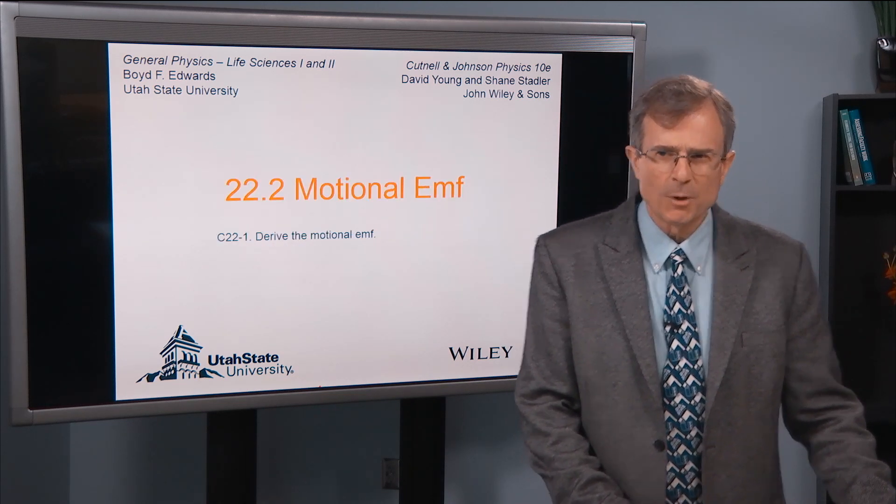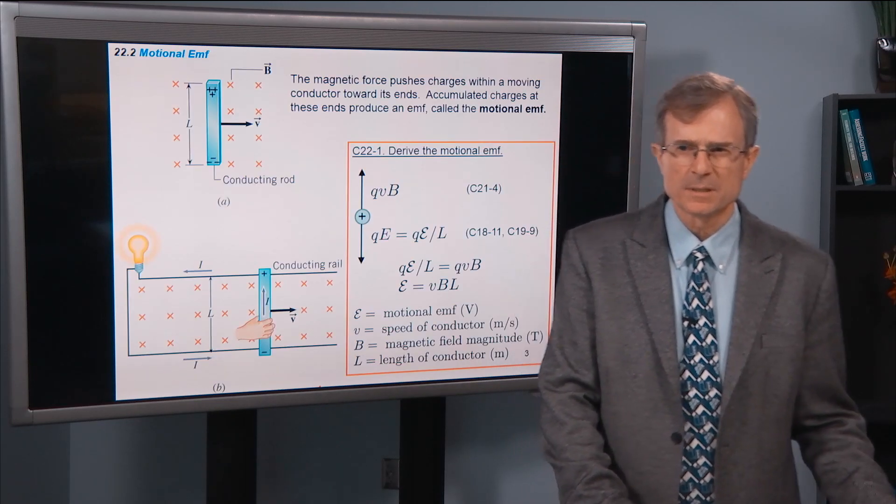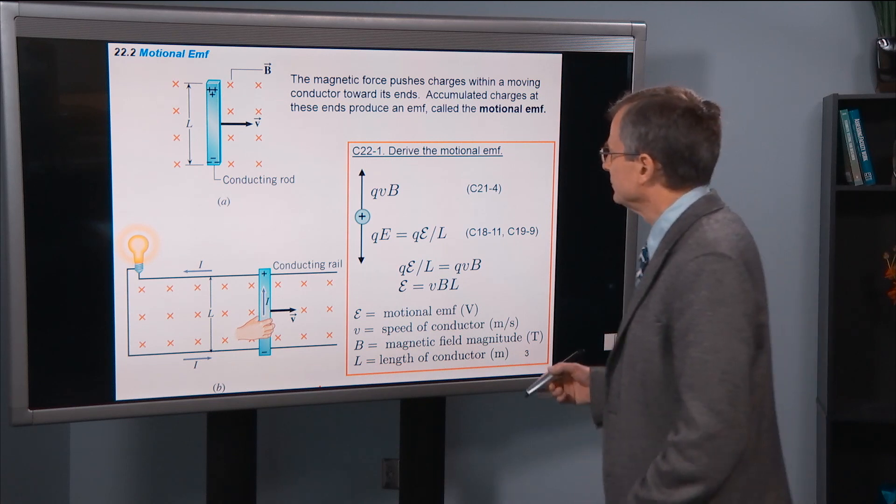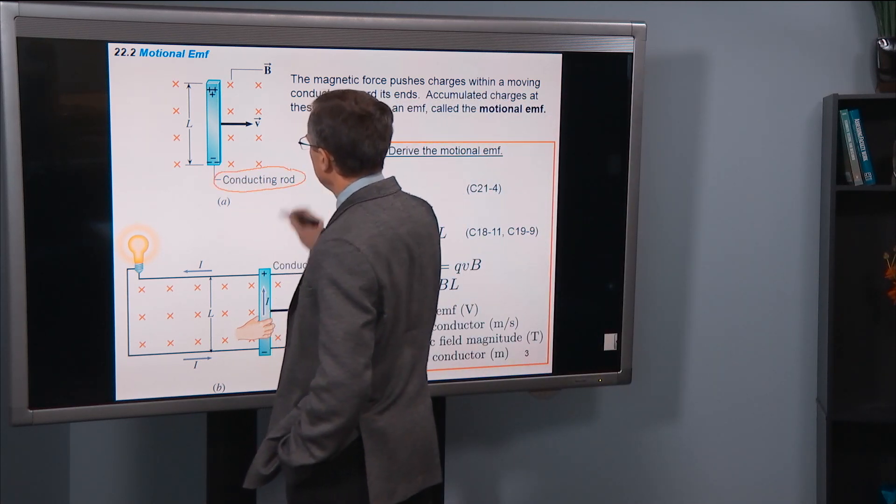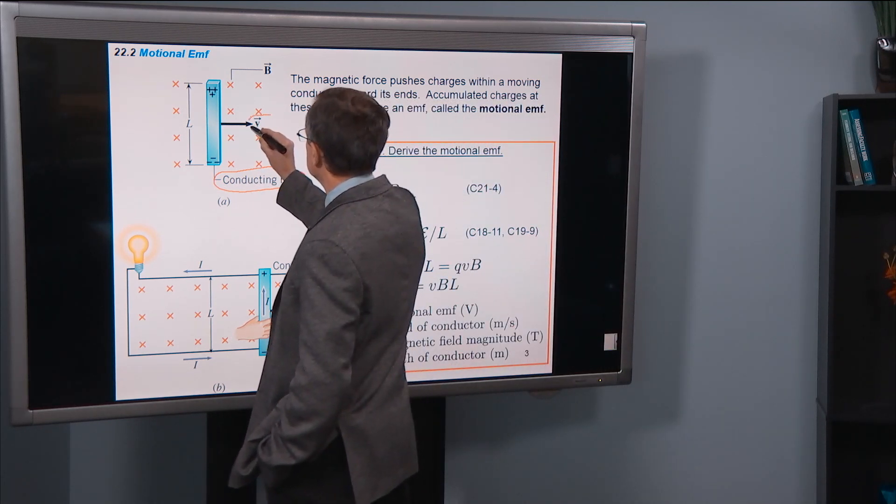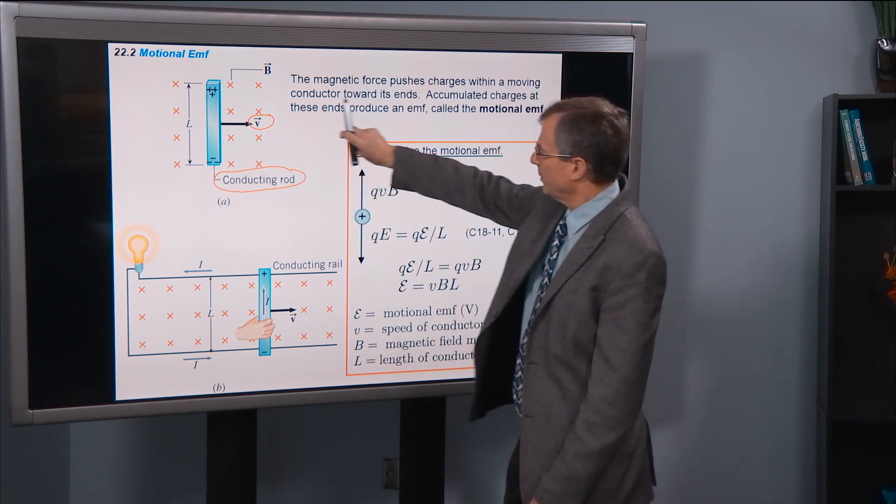So first, the Motional EMF. Just one concept in this section. Here's the idea. If you have a conducting rod, colored blue here, moving to the right with velocity v, it's a rod moving to the right like this.